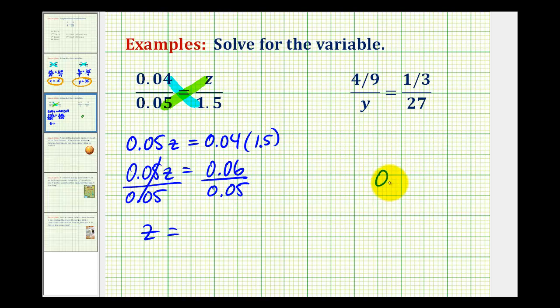So we have 0.06 divided by 0.05. In order to perform this division, we want the divisor to be a whole number. So move the decimal point to the right twice, and then we'll do the same in the dividend. Move it up into our quotient, and now we'll divide as we normally do. So there's one, five, and six.